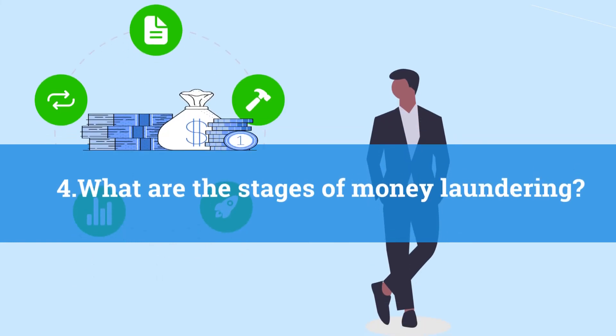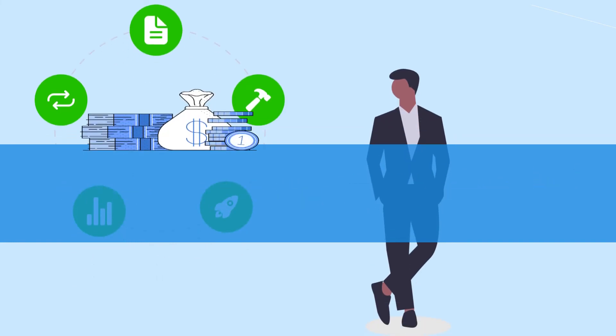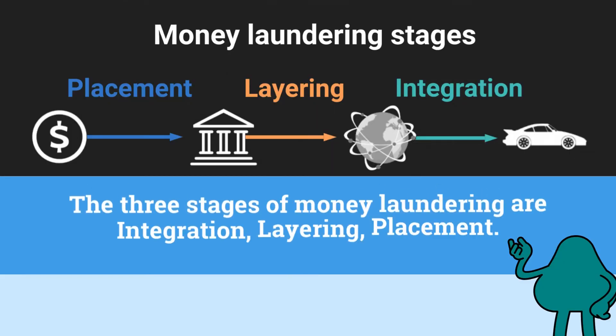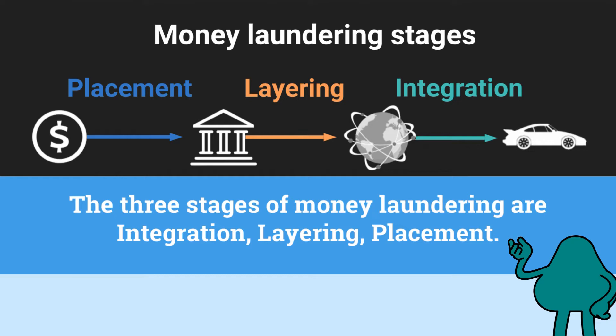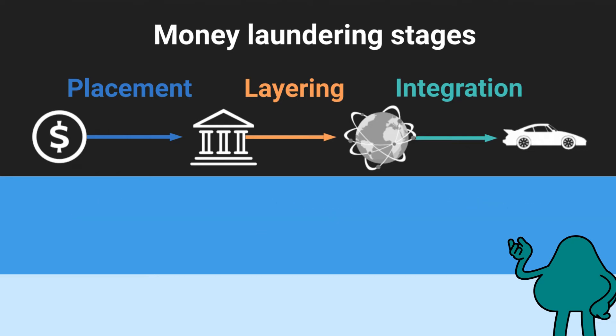Number 4: What are the stages of money laundering? The three stages of money laundering are integration, layering, and placement.